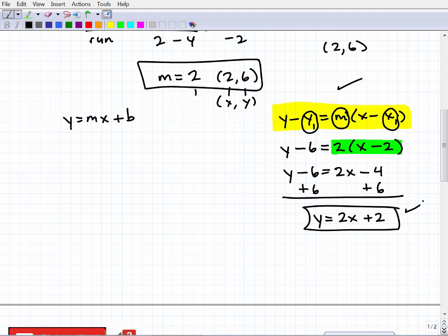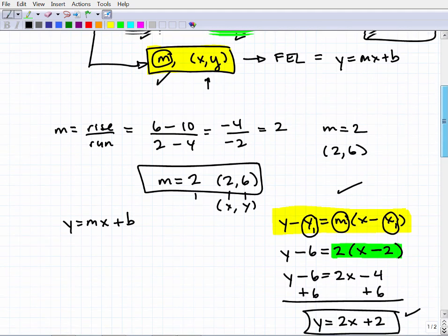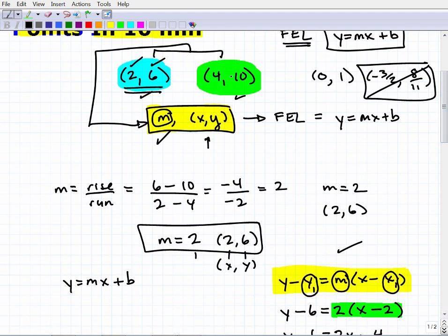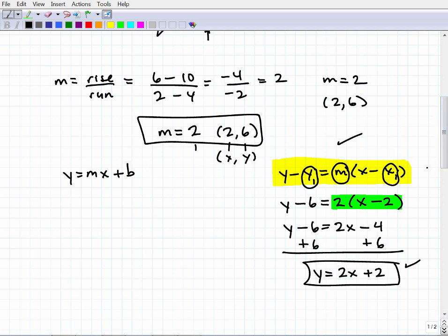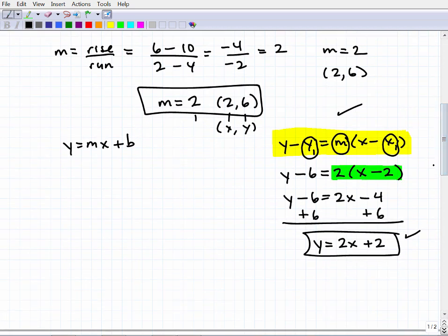That is the equation of a line that runs through these two points, or an equation of a line that has a slope of 2 and runs through that one point, which is amongst these two points. So this is the preferred way of doing it. I've been teaching math for a long time, so typically this process will lead to fewer mistakes. It's more direct.